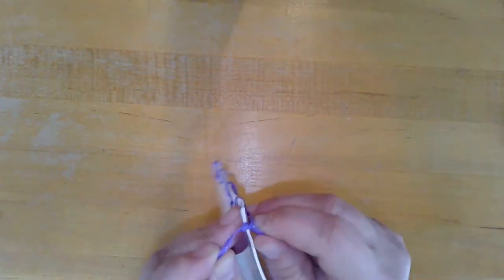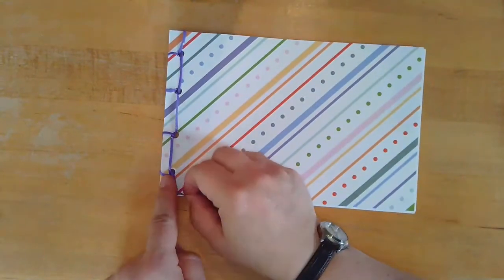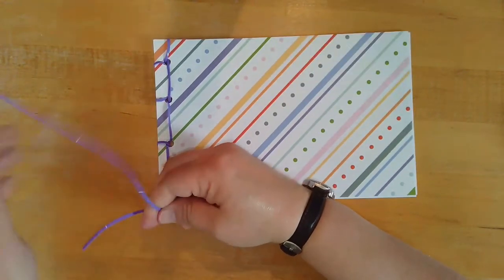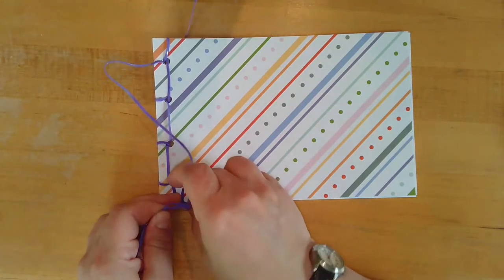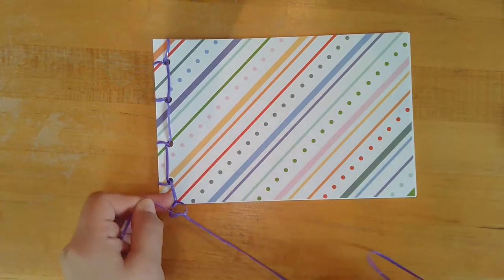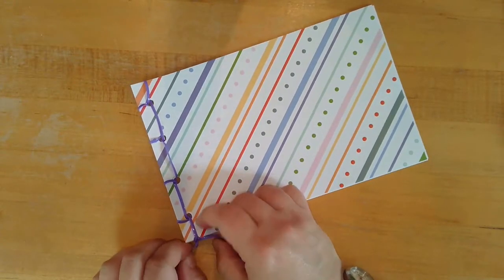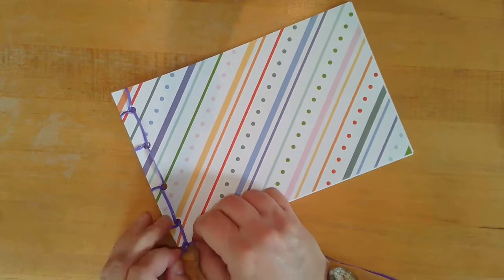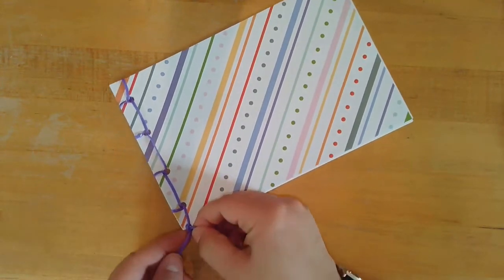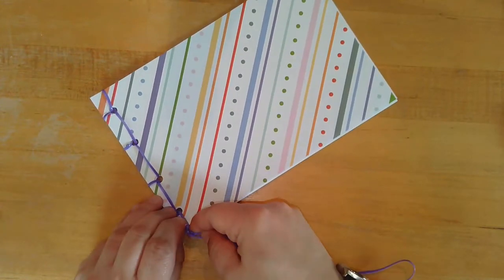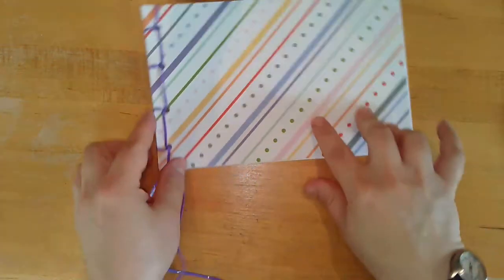You're going to want to make sure that you don't tie it too close to the edge of the paper so that you are able to turn your pages. Make sure that jelly string is knotted tightly because it likes to slip loose. Like that.